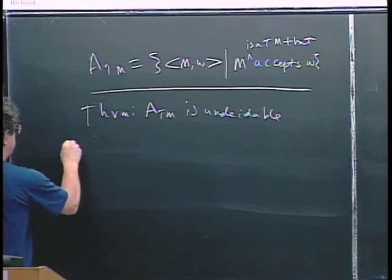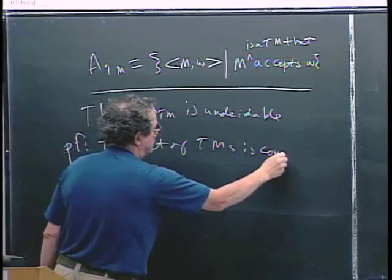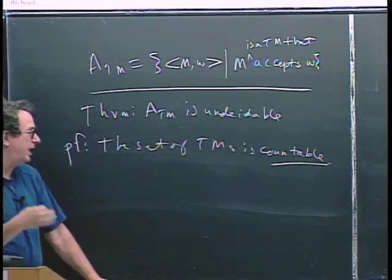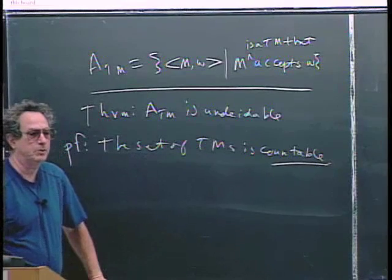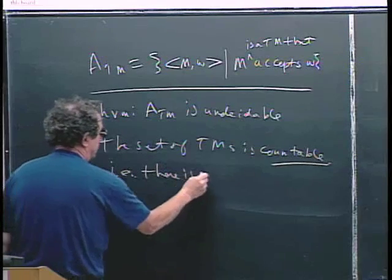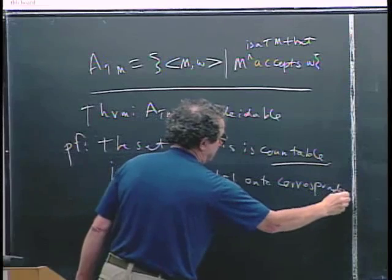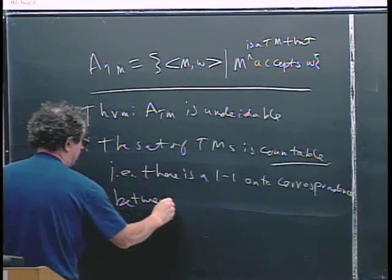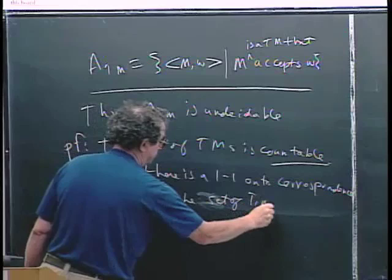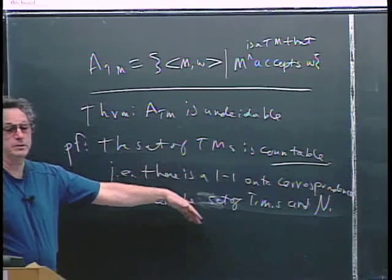The first thing to establish is that the set of Turing machines is countable. Last time we talked about what countable means. Countable means that set, the set of objects, in this case the set of Turing machines, can be put in one-to-one correspondence with the natural numbers. That is, there is a one-to-one and onto correspondence between the Turing machines, the set of Turing machines or the elements in the set of Turing machines, and the natural numbers. Anybody have any idea how you exhibit this correspondence?